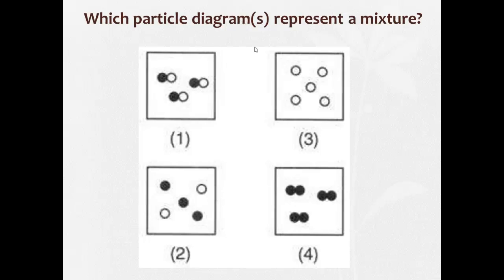Here, a multiple choice, nice and easy. Which particle diagrams represent a mixture? Well, these are all the same, these are all the same, these are all the same. So one, three, and four are pure substances. Two, since there's different parts that are different, two is a mixture.